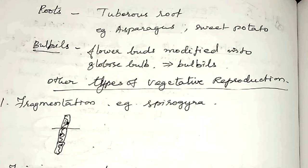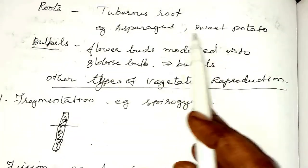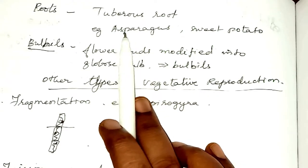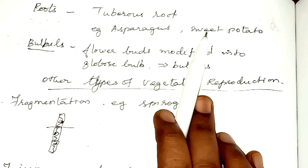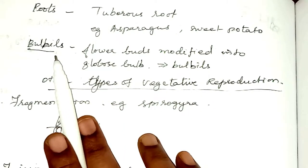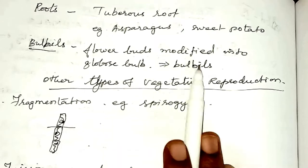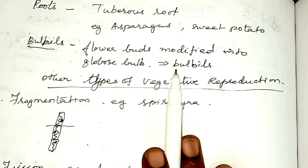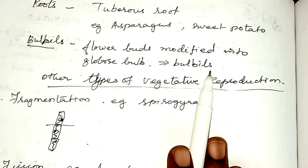The next vegetative propagation method is through the root — tuberous root — for example, asparagus and sweet potato. The eye-like structure in the tuberous root, as in asparagus and sweet potato, can be used for vegetative propagation. The next is bulbils. In some plants, the flower buds are modified into globose bulb-like structures that contain bulbils. When bulbils grow and mature, they shed off from the plant, fall on the ground, and grow into new plants. An example is agave.